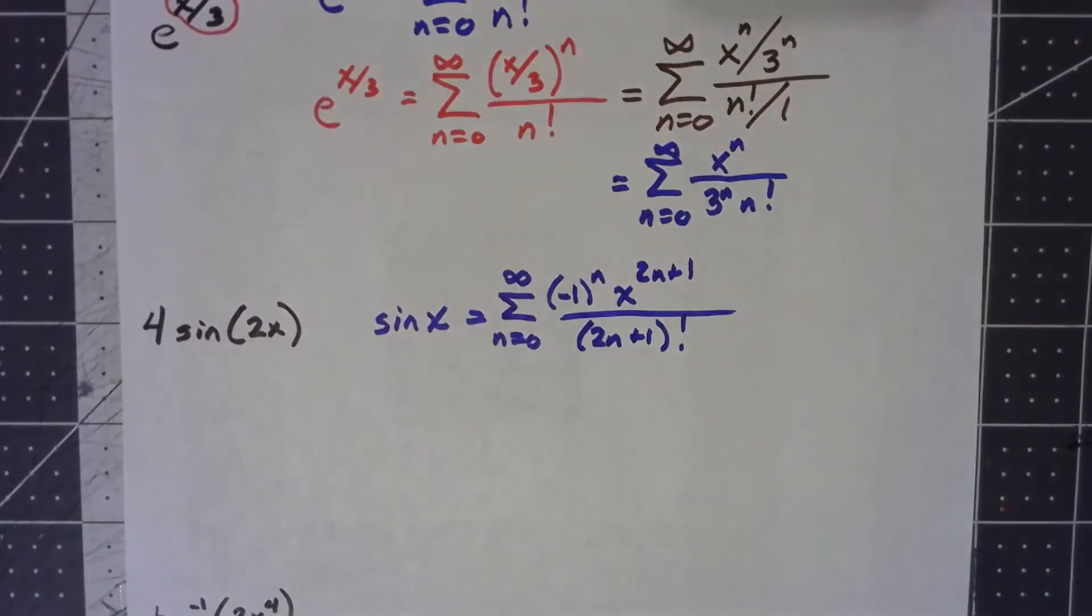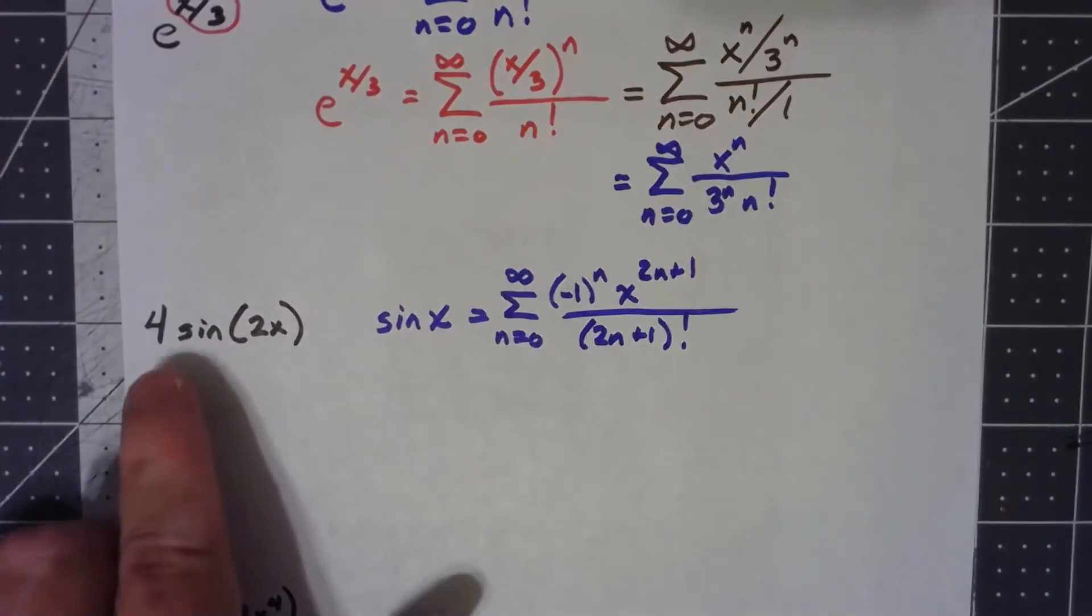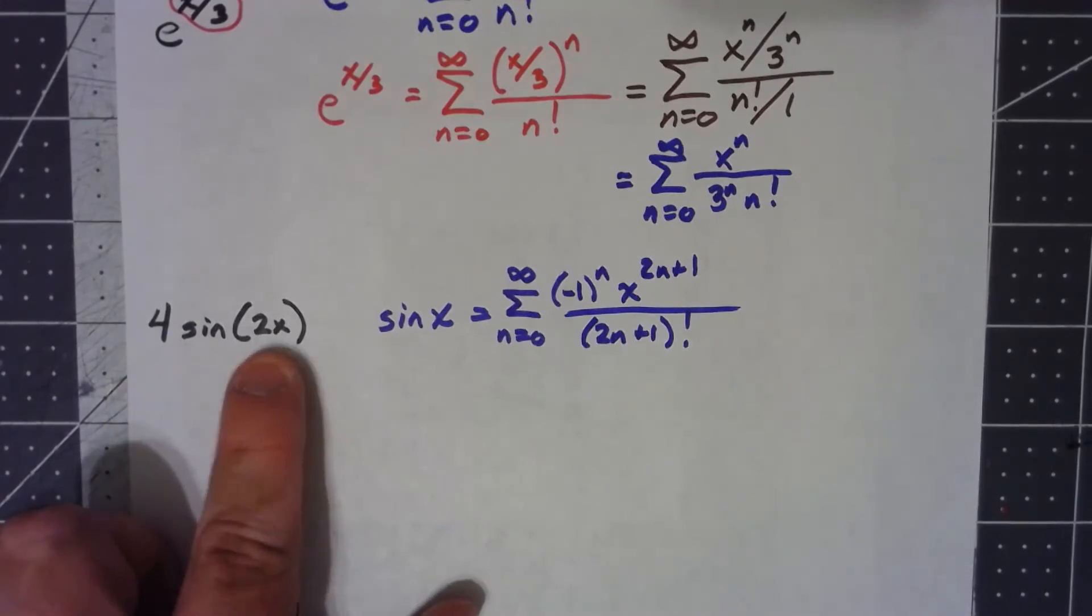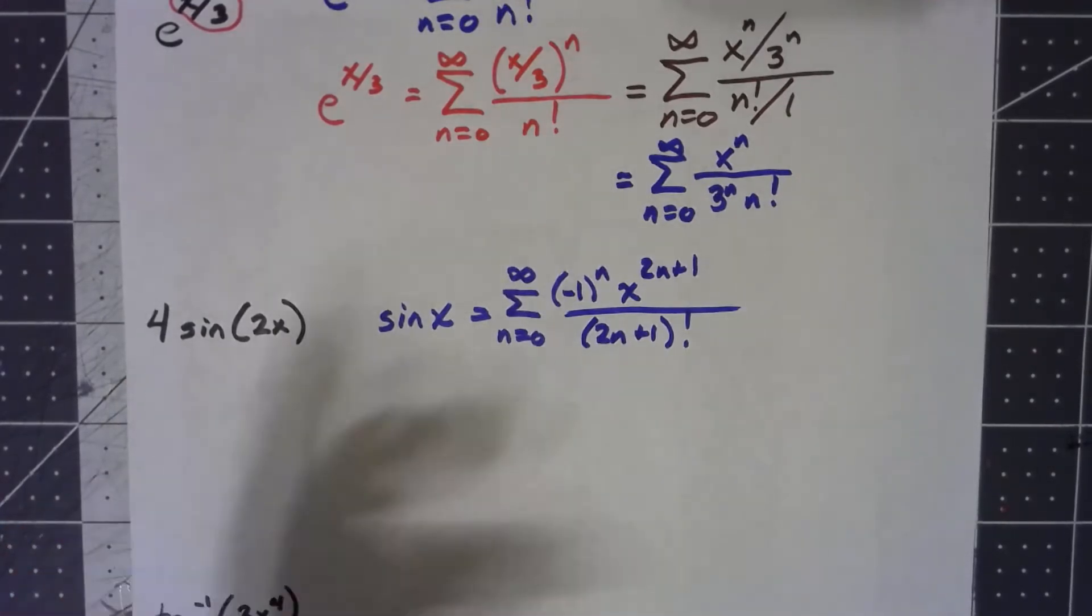Now I'm doing two things here to it. One, I'm multiplying by 4, and then I'm plugging 2x in, in place of x. And that's all.